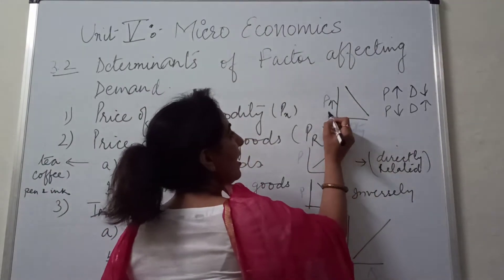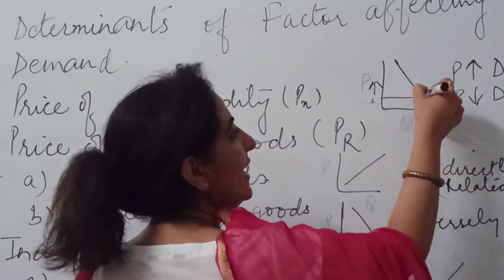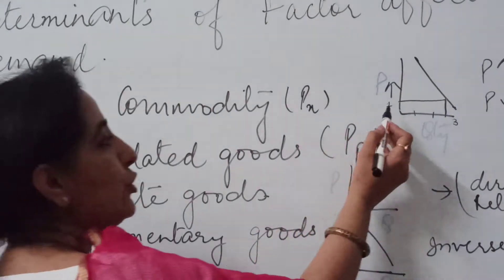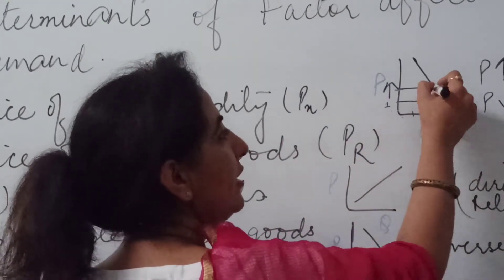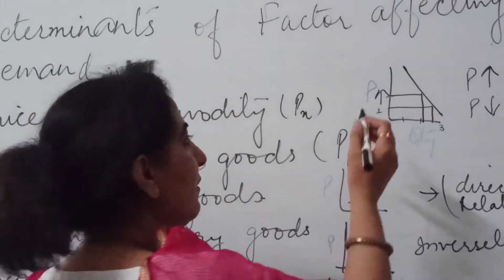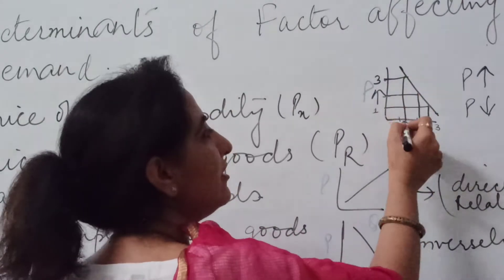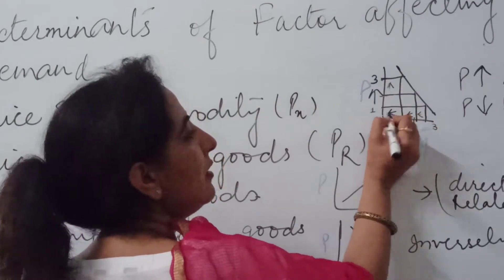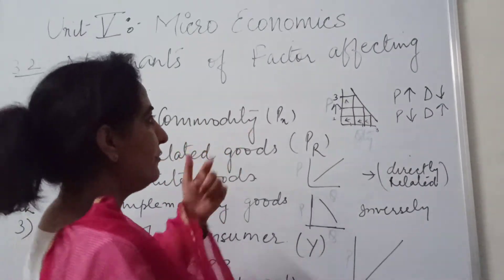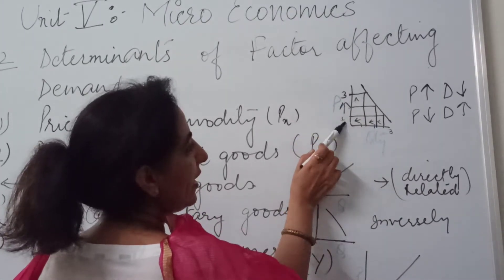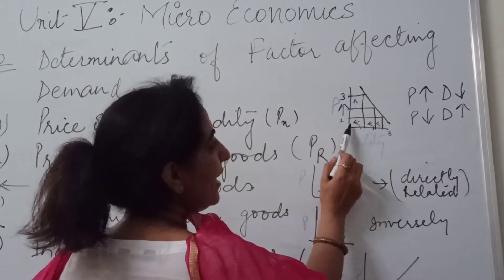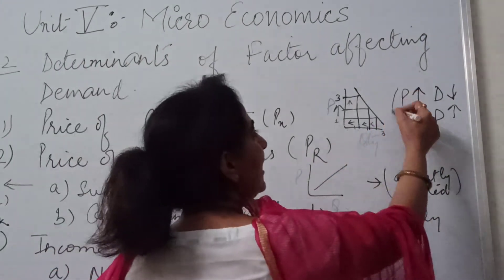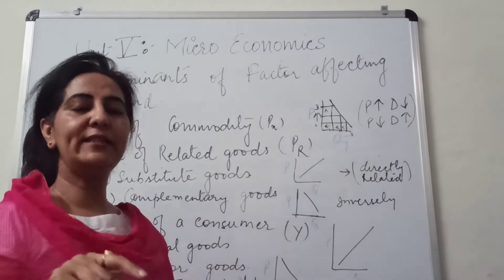Suppose if the price charged for the commodity is rupee 1, I am getting 3 units of the commodity. If price shoots up from 1 to 2, the quantity demanded will reduce. Price goes up to 3, the quantity demanded will be further reduced. As price goes up, quantity demanded goes down, and vice versa — if price comes back from 3 to 2 to 1, the quantity demanded increases. So there is an inverse relationship between price and demand.